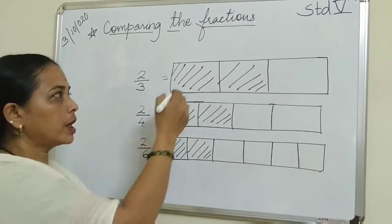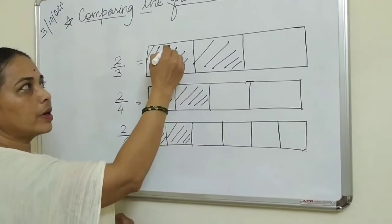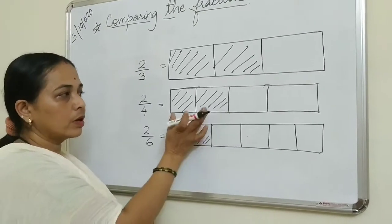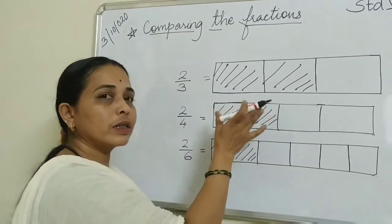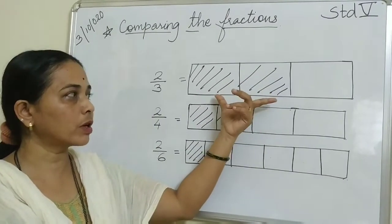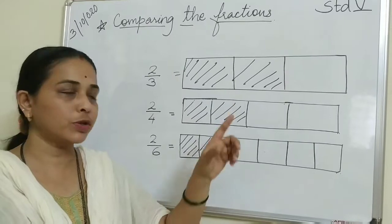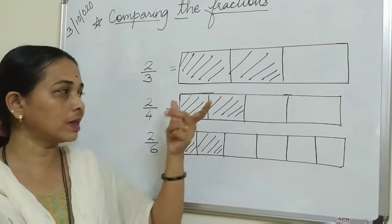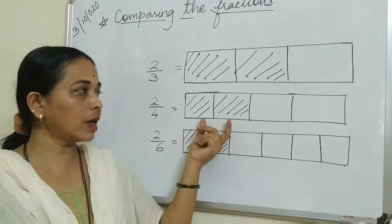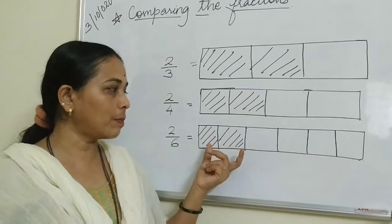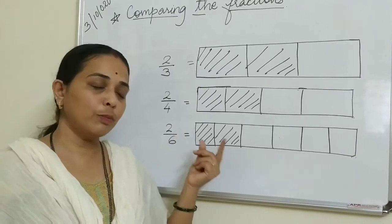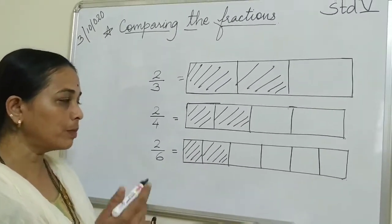If you take the same paper strip and make more parts, the parts are going to become smaller. If three parts are made of that same strip, those two parts are bigger parts. If you make four parts, then two parts will be smaller. And if you cut it into six parts, those two parts will be still smaller. So what do you mean by that?